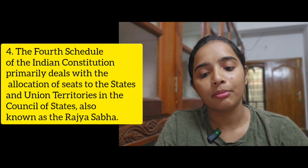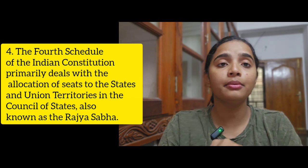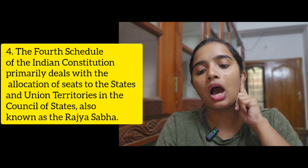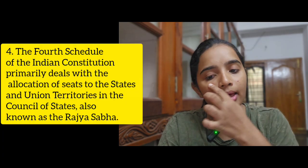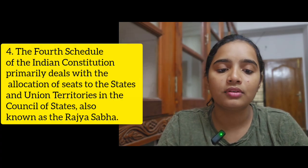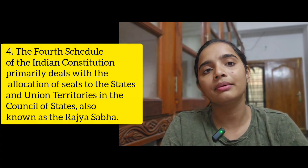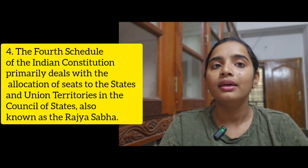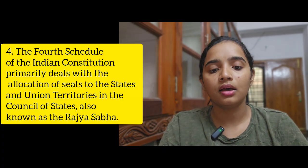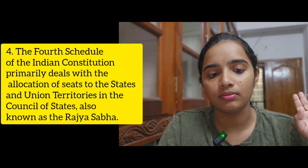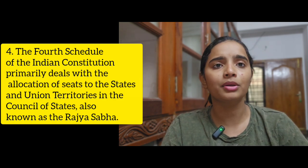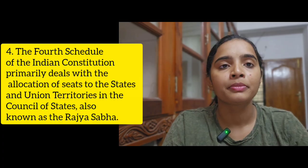R is the fourth schedule — that is the Allocation of Seats in Rajya Sabha to the States and Union Territories. R is the Seat Allocation. In the Union Territories and States, if you have the Seat Allocation of Rajya Sabha, it doesn't matter.